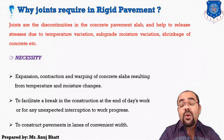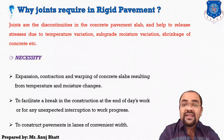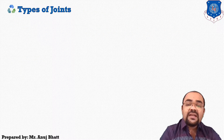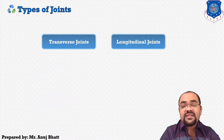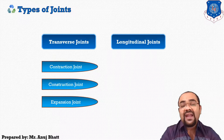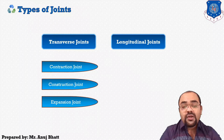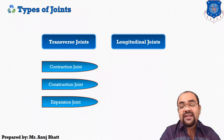There are basically two types of joints we provide in rigid pavement: transverse joints and longitudinal joints. Transverse joints have a few different core types: contraction joints, construction joints, and expansion joints. The joints provided in the transverse direction, perpendicular to the center line of the road, are generally known as transverse joints. According to their function, transverse joints are classified into expansion, contraction, and construction joints.